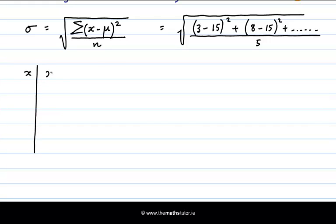Then we'll have our deviations, x minus μ. Then we'll have a column for our squared deviations. And finally we'll add up these, we'll find the total of those.